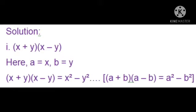Here, at the place of a we write x and at the place of b we write y. By using the formula (a + b)(a - b) = a² - b², we substitute to get (x + y)(x - y) = x² - y².